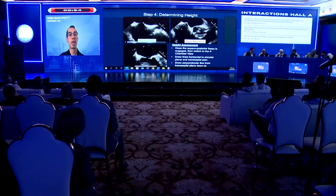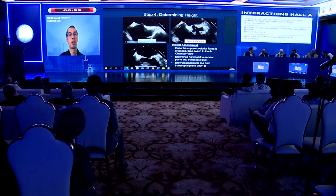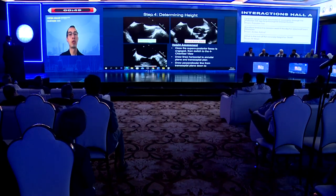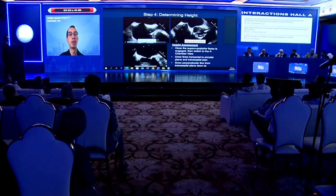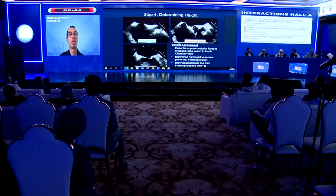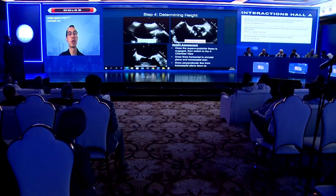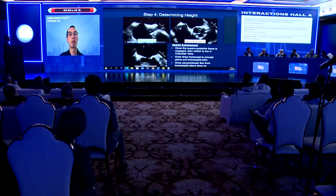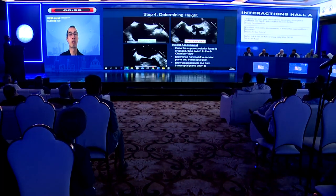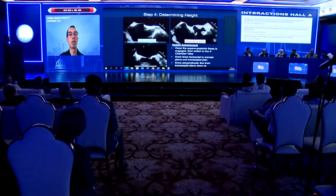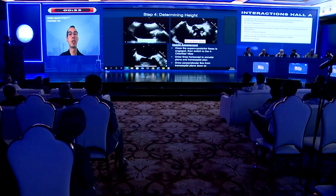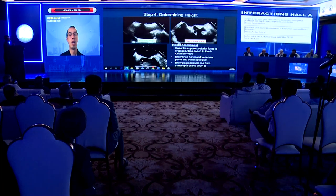On the bicaval view, tenting is visualized. Biplane imaging is then used simultaneously to see how posterior the needle is — the image is flipped for real-time guidance. The echo operator sweeps the cursor to the left until the needle drops, allowing both planes to be seen simultaneously. Height is then measured by drawing parallel lines across the tenting point to the mitral annular plane.